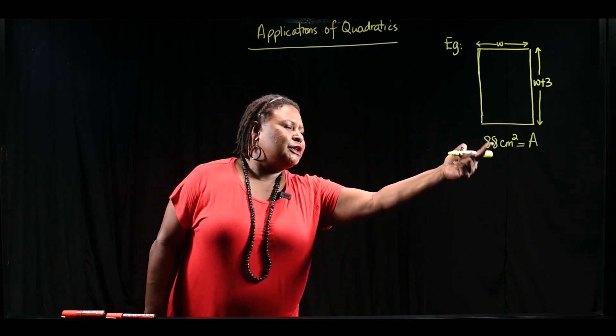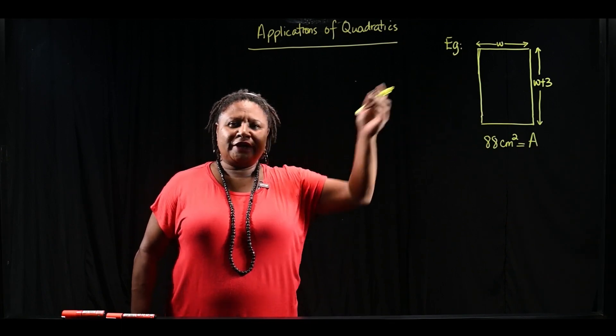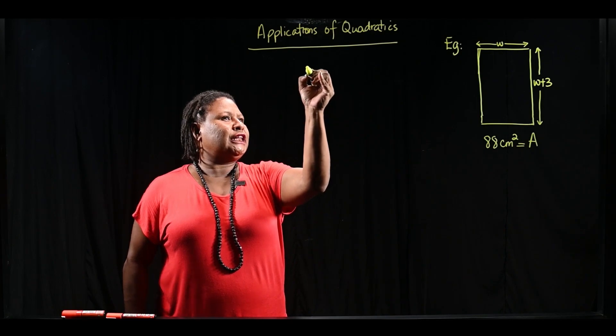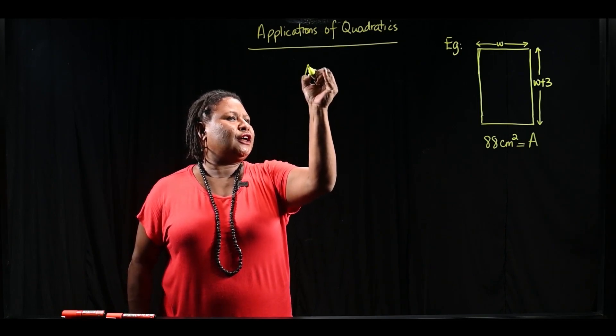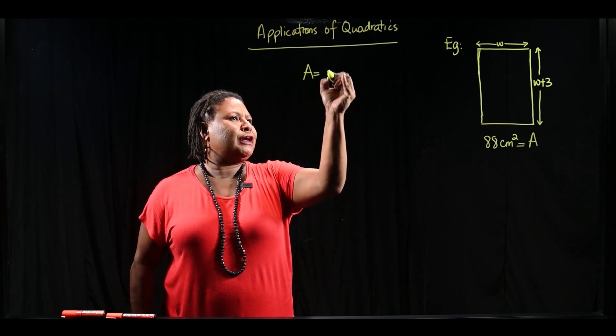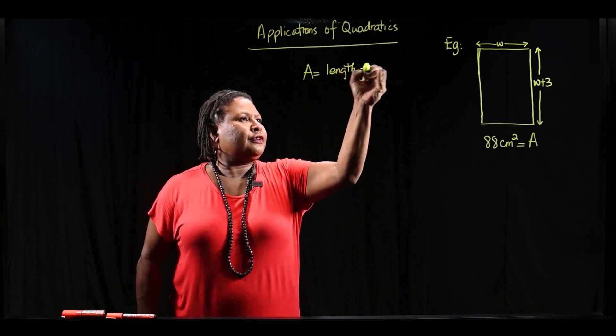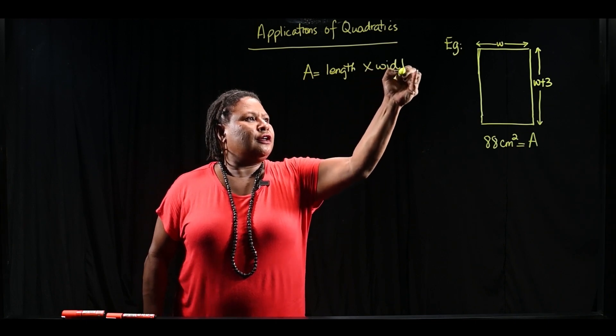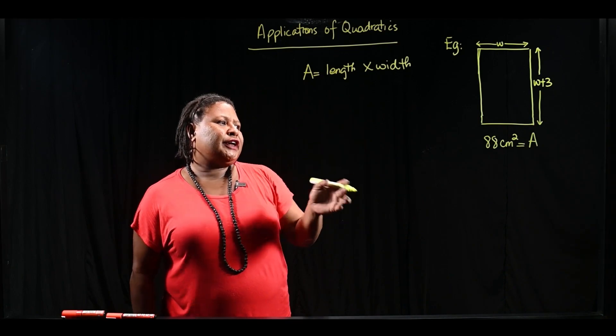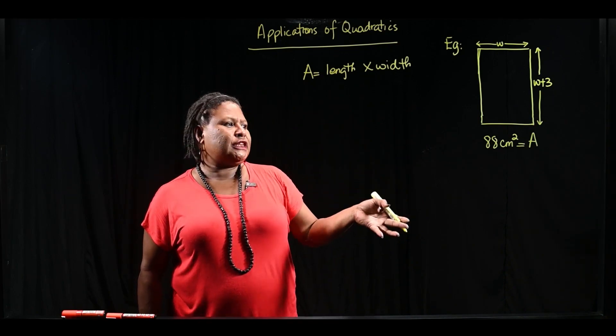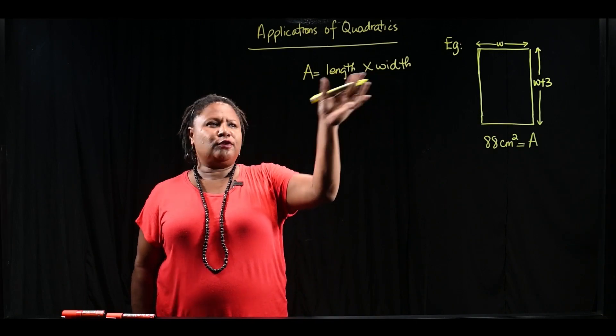We are going to use the area formula for the area of a rectangle. We know that when we have a rectangle, the area is found by multiplying the length times the width. So area of a rectangle is equal to length times width. Let's put in the information that we have into our formula.